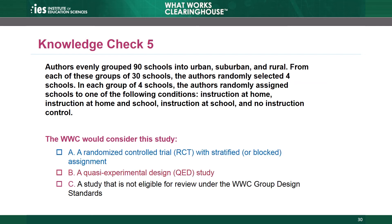The answer is A. The researchers used a stratified randomization process — they stratified schools based on area type and then randomly selected four schools from each of those strata. Lastly, the study authors randomly assigned those schools to one of four conditions. The study assigned units entirely by chance, and each unit had a non-zero probability of assignment to each group. Choices B and C are incorrect. Note that even if the researchers had used a non-random method to choose those schools, or if the schools had volunteered, the study would still be considered an RCT, because it does not matter how the researchers identified the population of units subject to randomization.